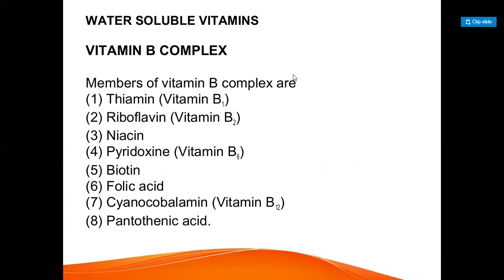Thiamin (vitamin B1) is found in rice — in the outer layer. Riboflavin is vitamin B2, also called the yellow vitamin or gold vitamin because of its yellow colour — 'flavin' means yellow colour. Niacin is vitamin B3. Pyridoxin is vitamin B6. Biotin, folic acid, cyanocobalamin (vitamin B12) is important for RBC development. Pantothenic acid — all of these are B complex vitamins.